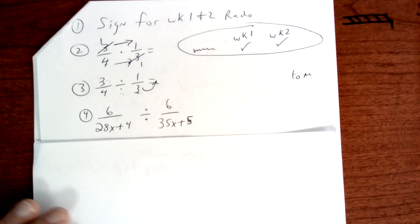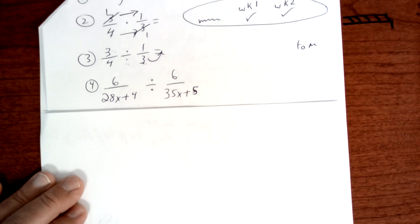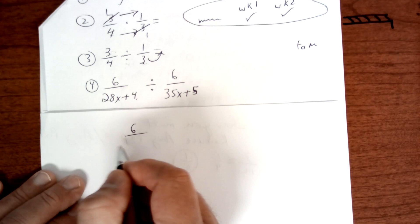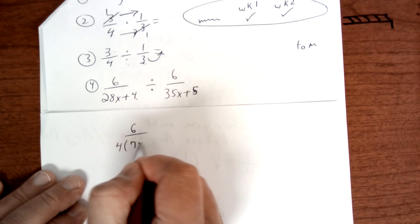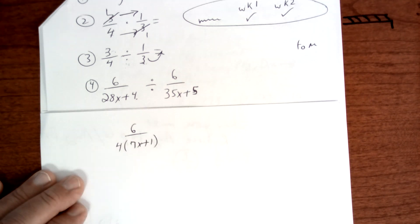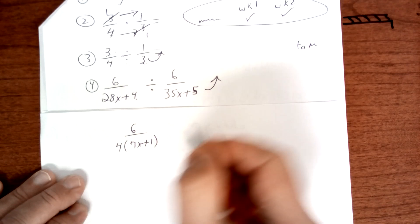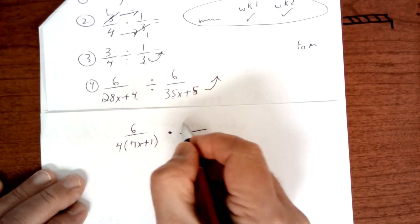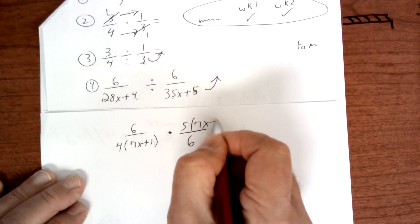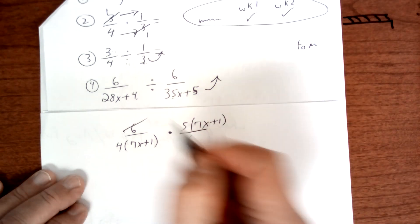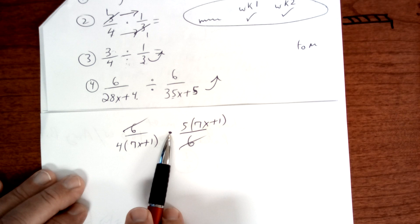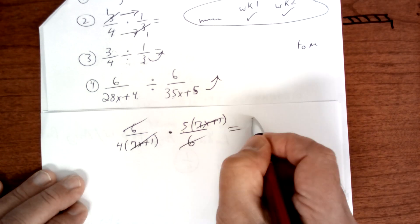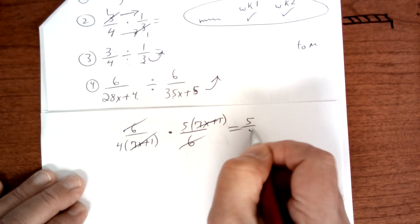This one is division but you have to factor first. If I factor out a 4, I get 6 over 4 times (7x + 1). Now flip it — the 6 goes to the bottom, and taking a 5 out leaves (7x + 1) on top. The 6 and the (7x + 1) cancel, so you get 5 over 4. That's the answer. You have to factor, flip, then reduce.